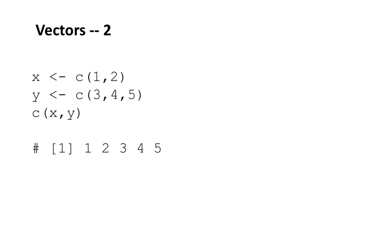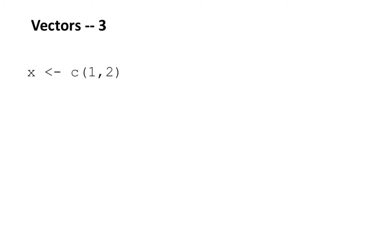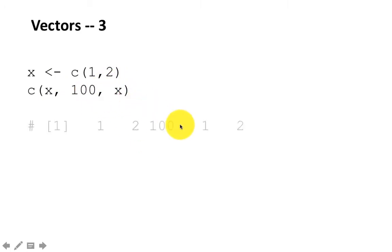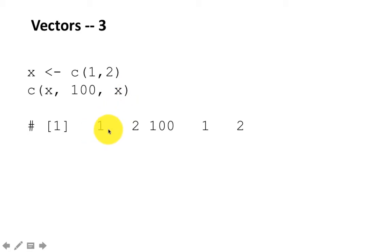We've seen how to concatenate two existing vectors. Here I create a vector x with values 1 and 2, then a new vector using c(x, 100, x). The result is 1, 2, 100, 1, 2 — it puts the contents of x, then 100, then x again. This shows you can concatenate the same vector multiple times. Once again the result is just displayed since we're not storing it anywhere.